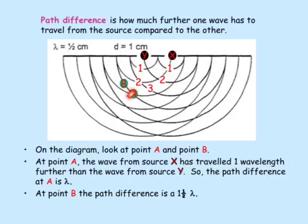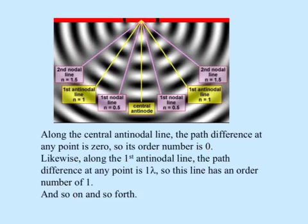Now let's look at point B. From X to B is four wavelengths, and from Y to B is two and a half wavelengths. So the path difference at B is one and a half wavelengths. The lines of constructive interference are called antinodal lines, and the lines of destructive interference are called nodal lines. Their order numbers are based on their path differences.